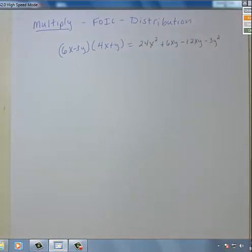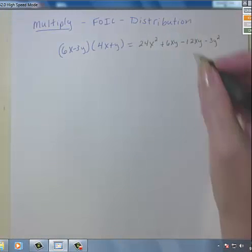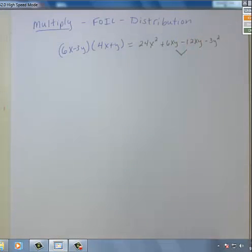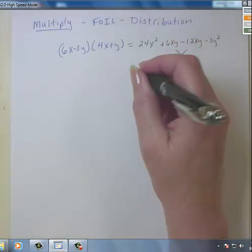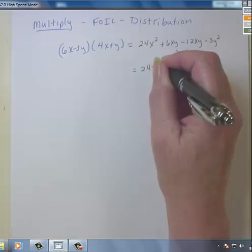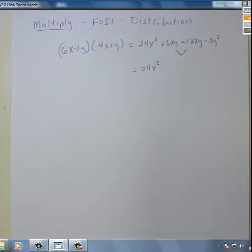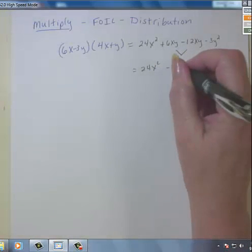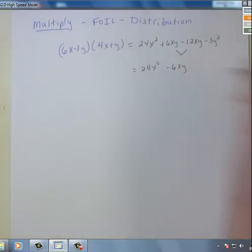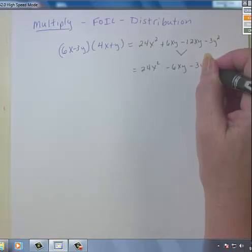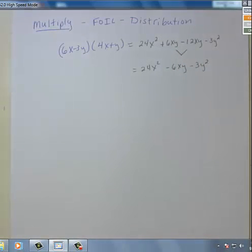Now we need to combine like terms. Usually the two terms in the middle will combine. So we've got 24x squared plus 6xy minus 12xy will get us negative 6xy minus 3y squared. And that is as simplified as we can get.